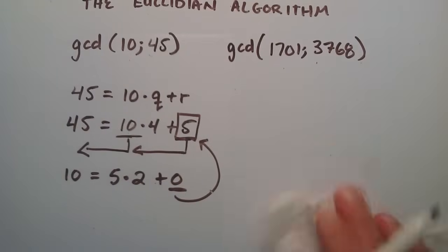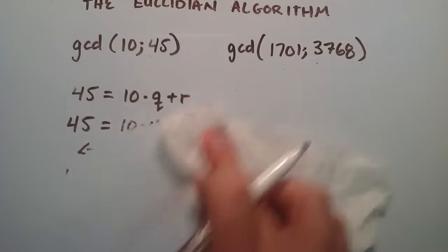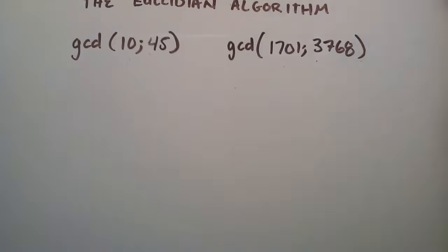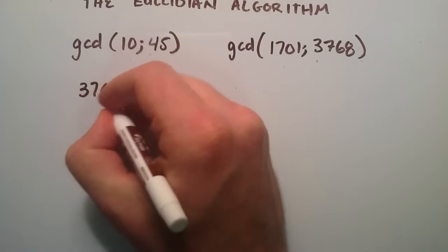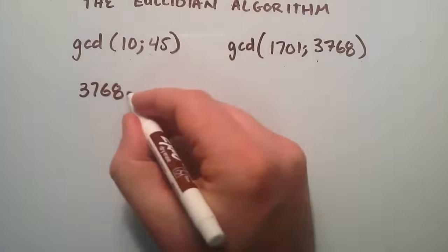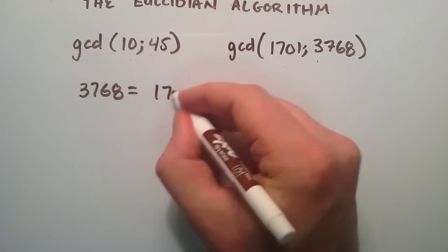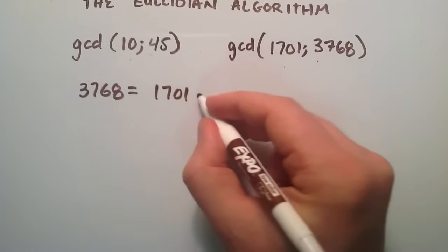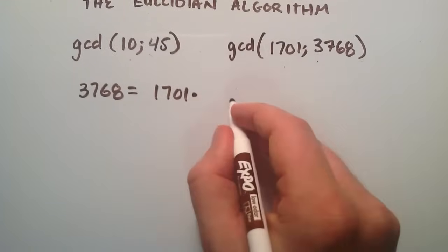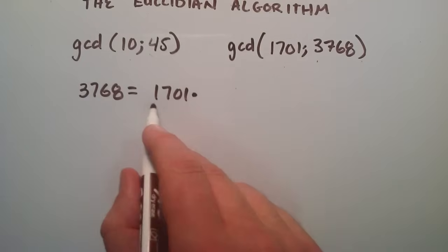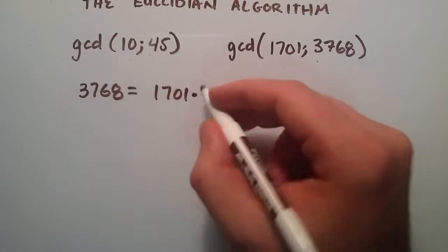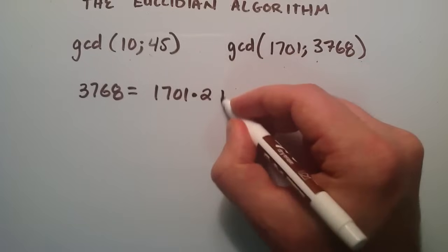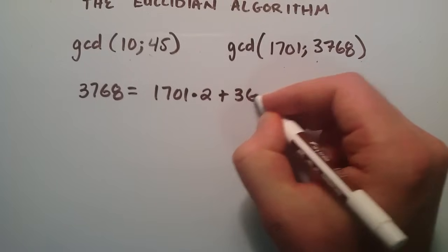So let's try this for this bigger example here now. So we take the larger of the two numbers, 3768, and set that equal to 1701, the smaller number, times some number plus some remainder. Well 1701 goes into 3768 two times, with a remainder of 366.